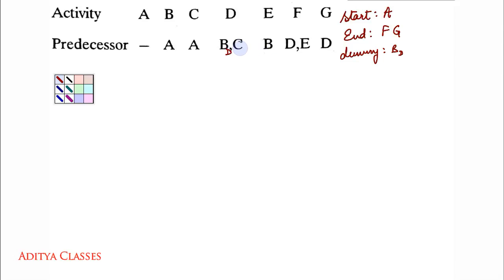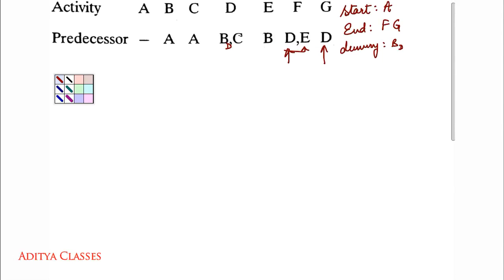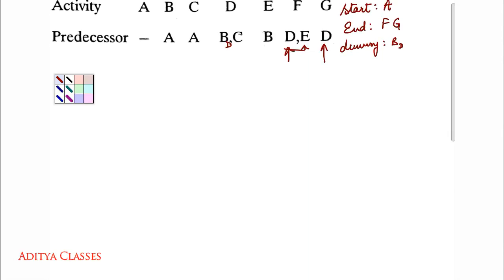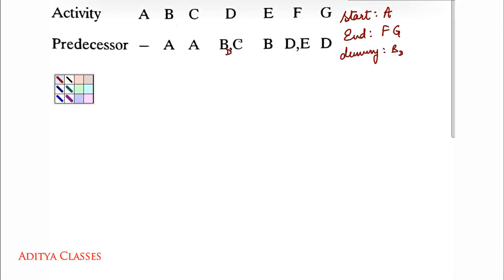B is done. C is seen once — that is with B — no worries. Then D is alone in one place, while here D is with E. So once again, D will come into a situation where a dummy of D will have to be made. And then E is alone only. So we know there will be two dummies in total.